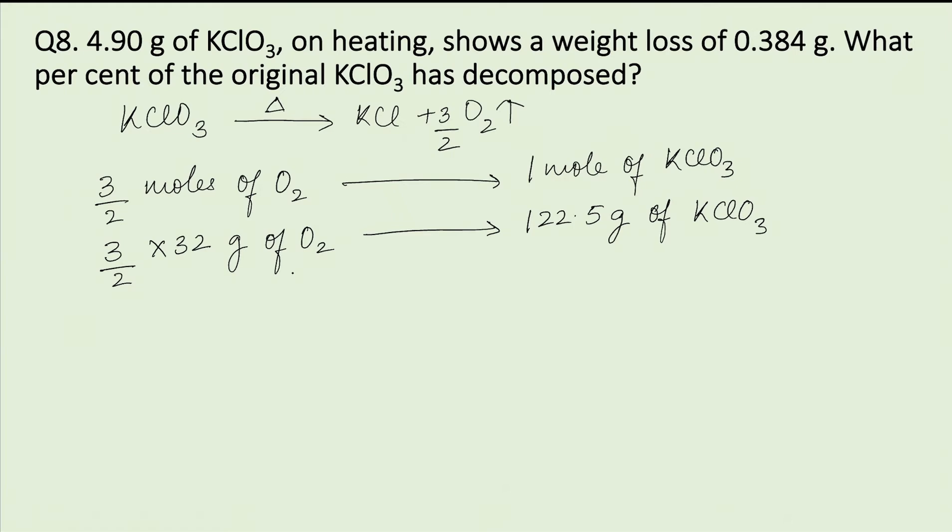Therefore, 3/2 times 32 grams of oxygen will be produced from 122.5g of KClO3. Now, 3/2 times 32 grams equals 48 grams of oxygen.